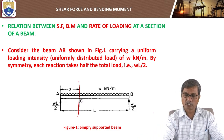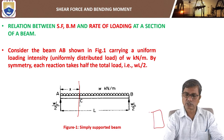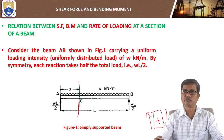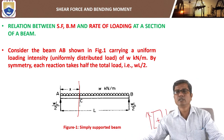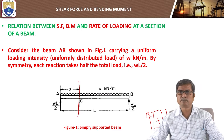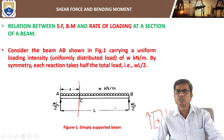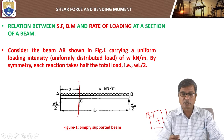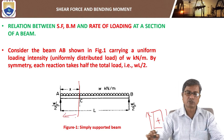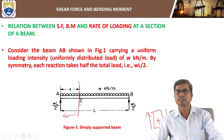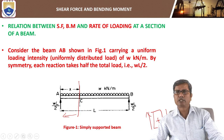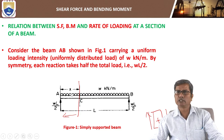The convention is: left side upwards and right side downwards is positive for shear force. We are considering the left-hand side of the section. So the shear force at C is plus WL by 2 minus Wx (UDL).